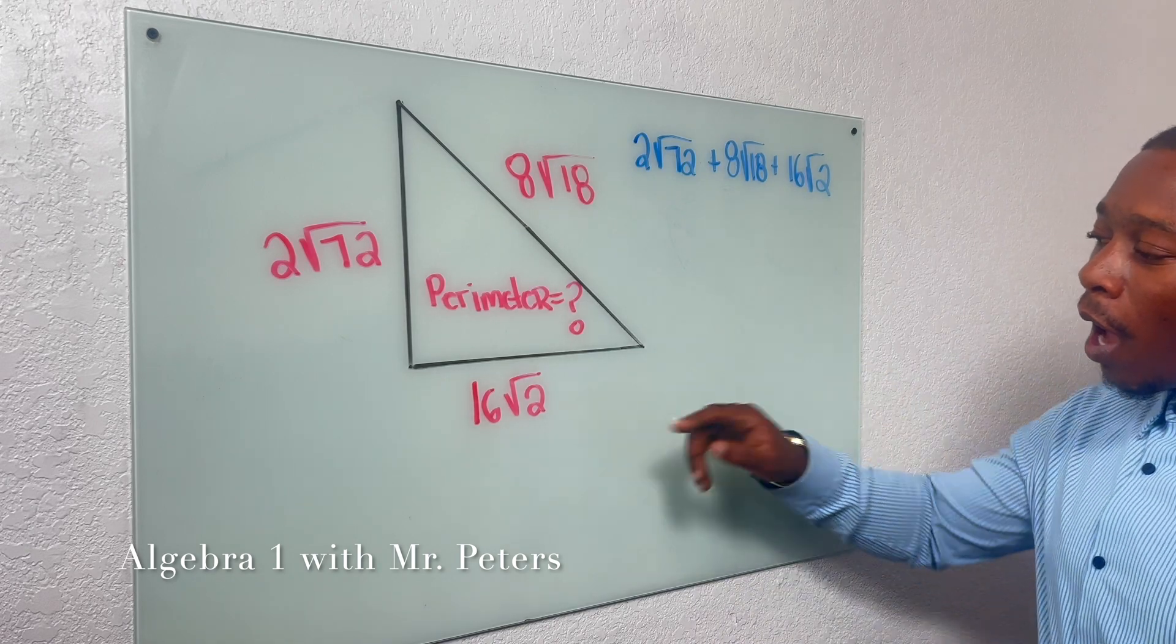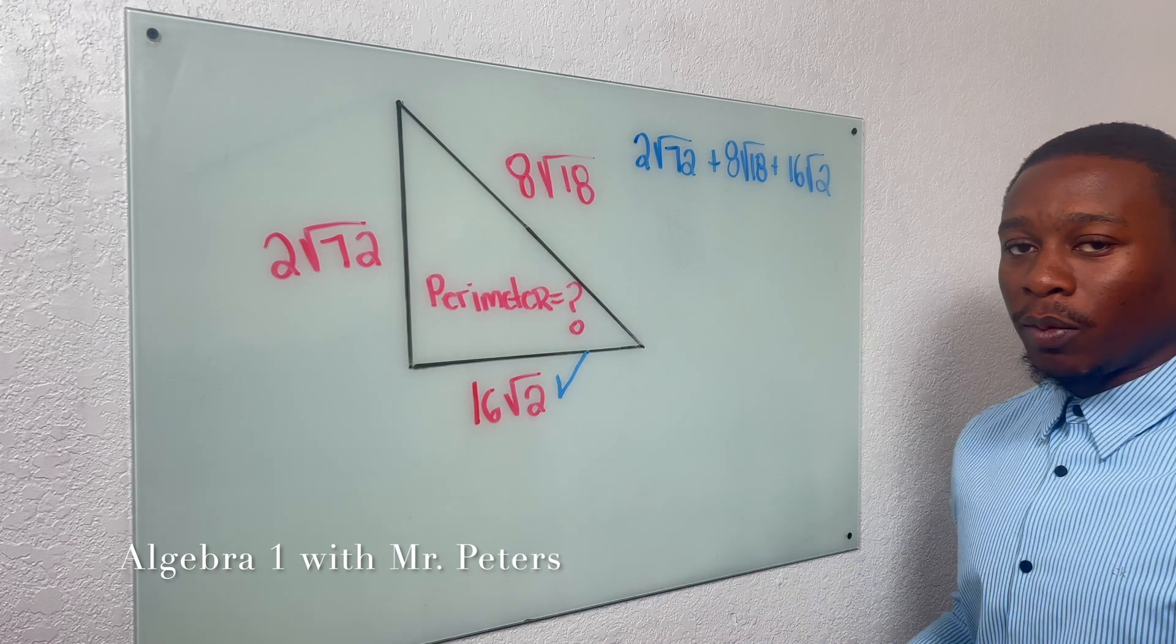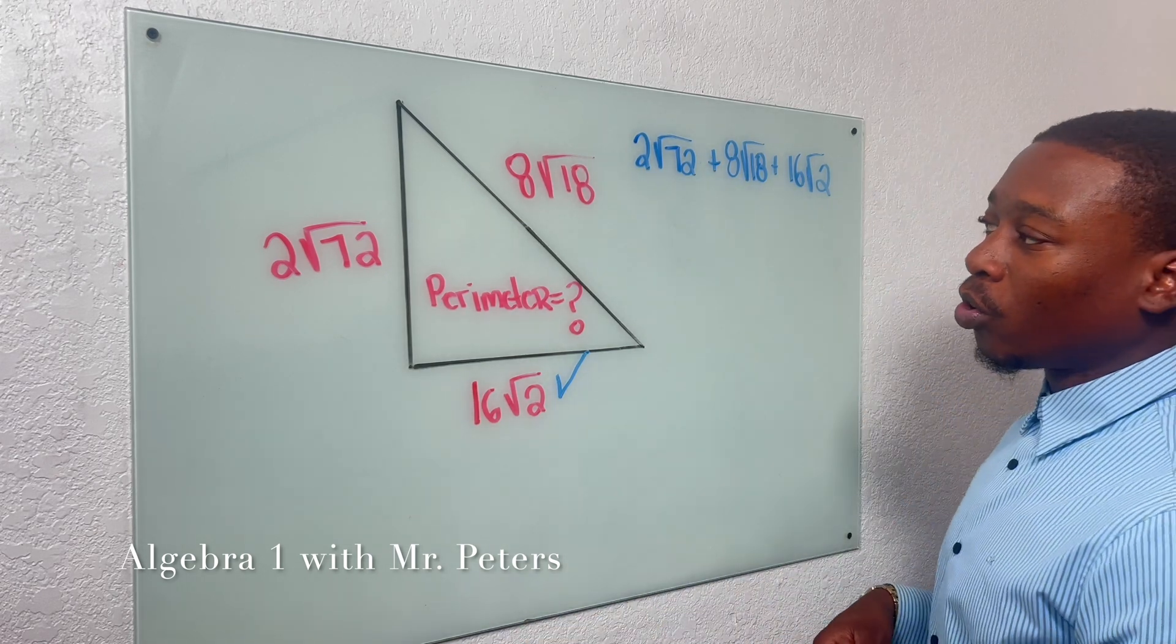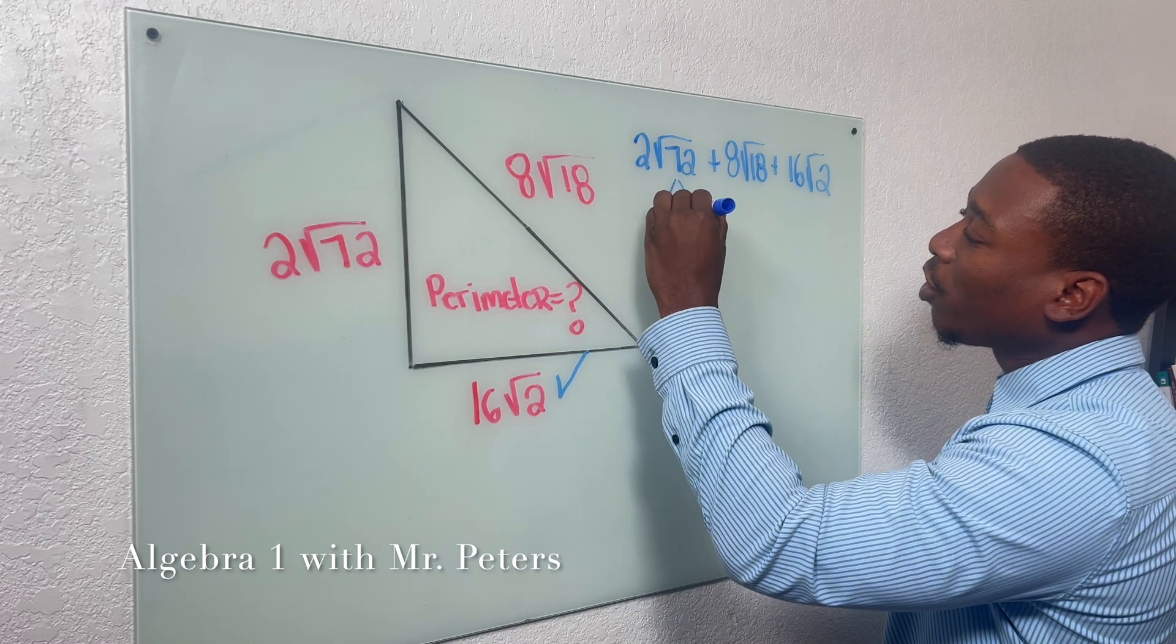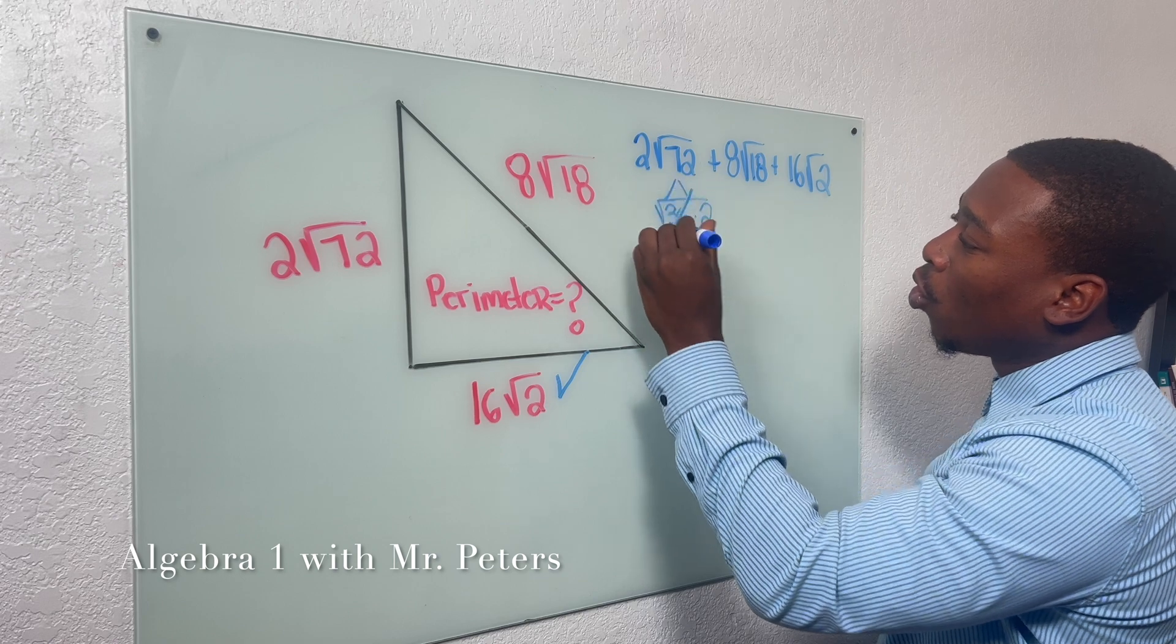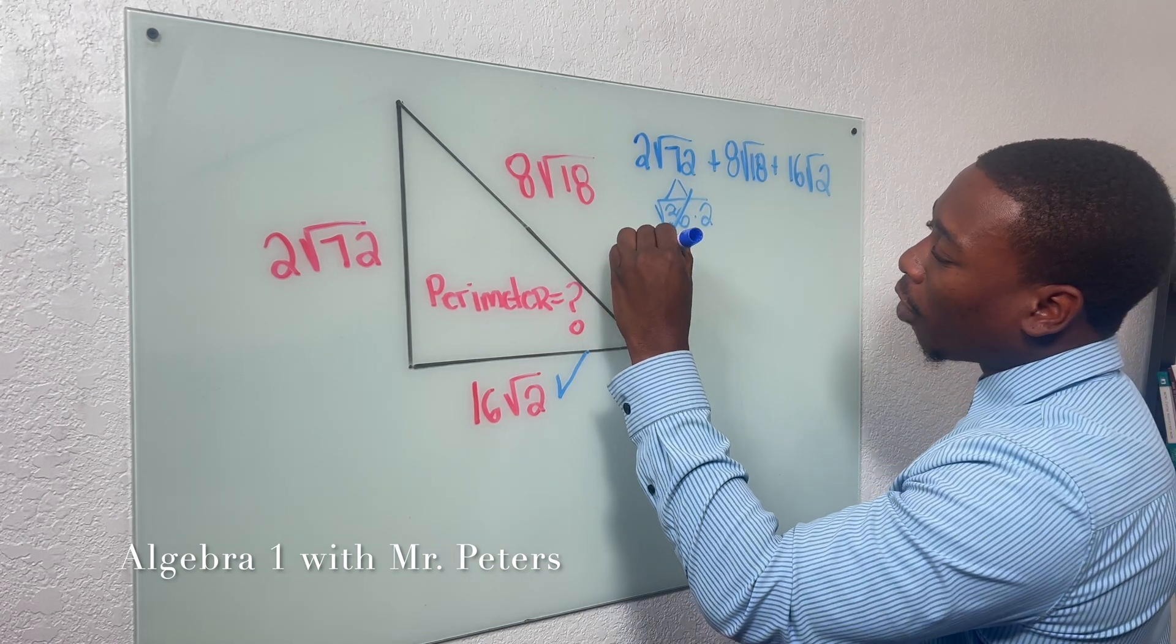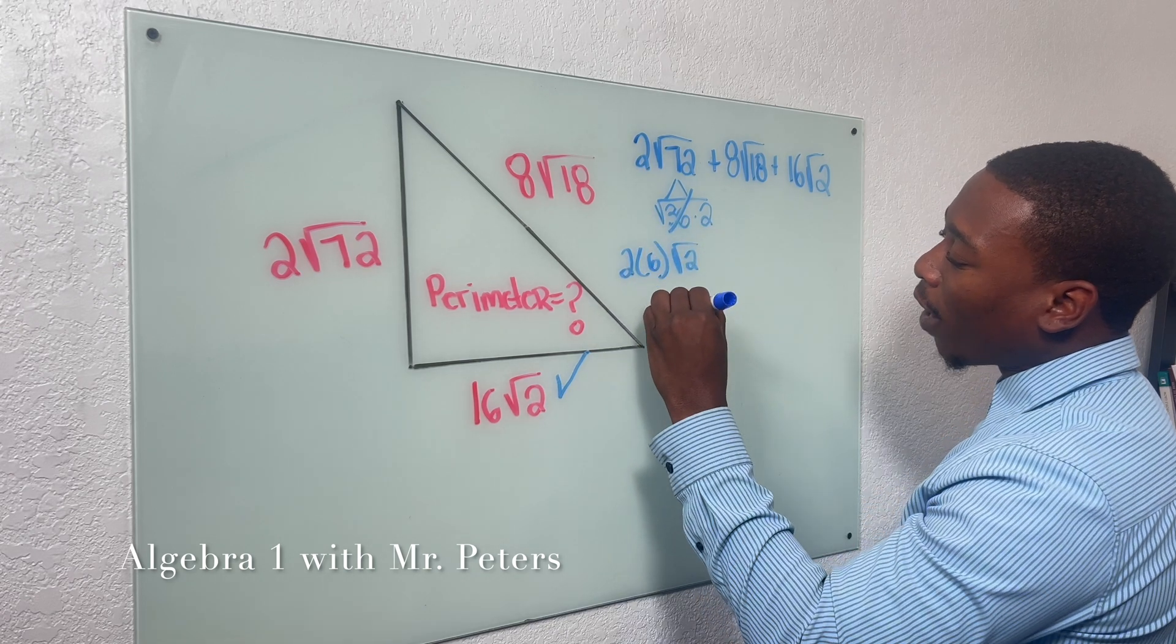So when we set this up now, I know that this radical right here is probably going to stay the same because I can't break down radical 2 anymore. So in our first radical, let's pay attention there. So when I break this down, we're going to get 36 times 2. We know 6 is a perfect square. So when this comes out, our final answer is going to be 12 radical 2.